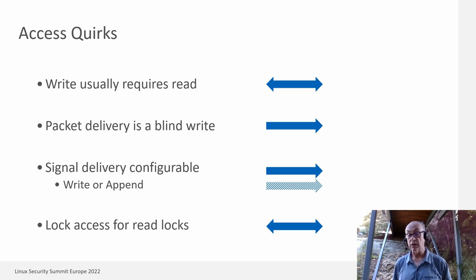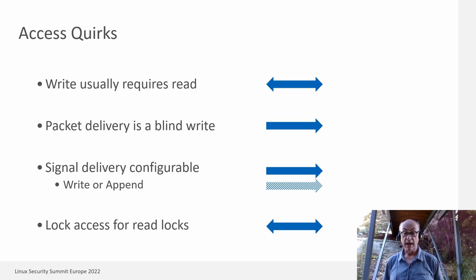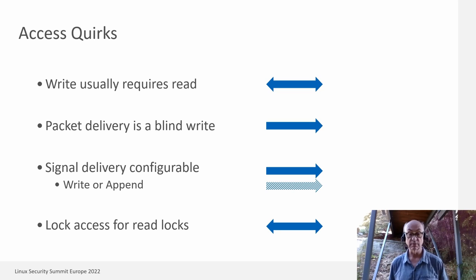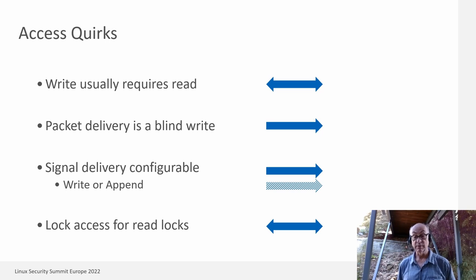We also have an interesting situation with read locks, because you can have a file open for read and set a read lock, which is a write operation. Although that might seem harmless, it's actually a covert channel — you can have a side-channel attack based on read locks. So we have a separate access mode called lock. You can set that separately, and read implies lock.